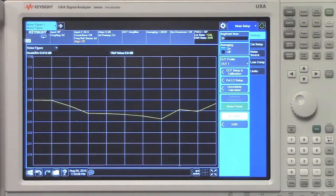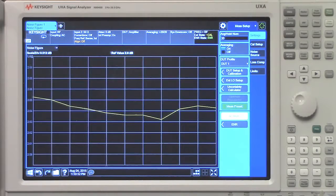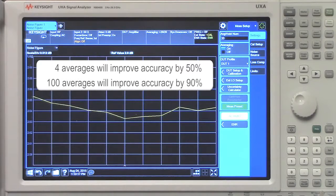Jitter uncertainties are reduced by the square root of n, where n is the number of averages. Four averages will improve accuracy by 50%, while 100 averages will improve the accuracy by 90%.